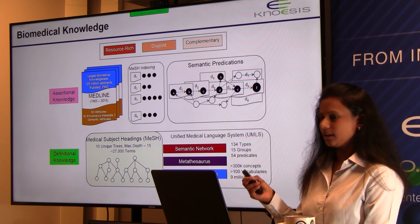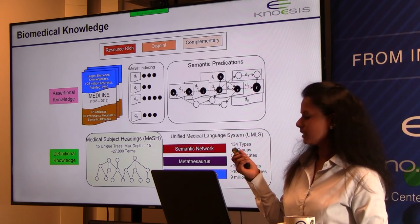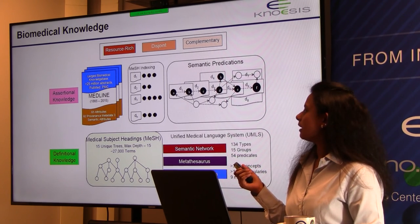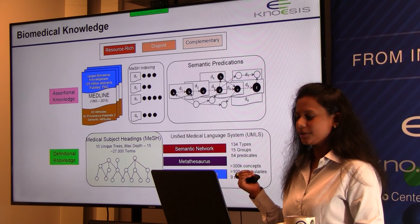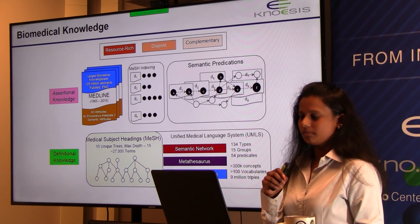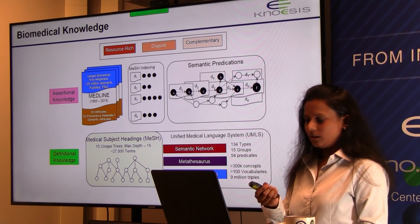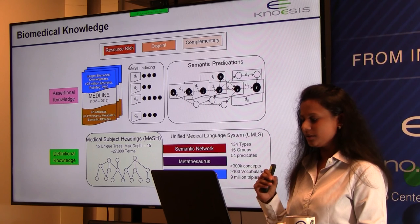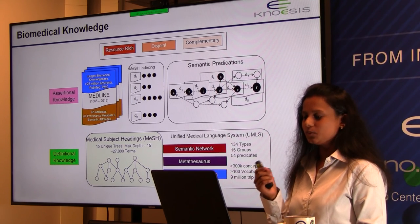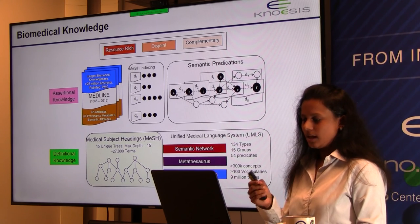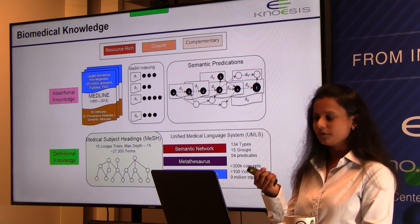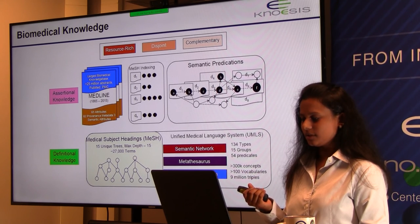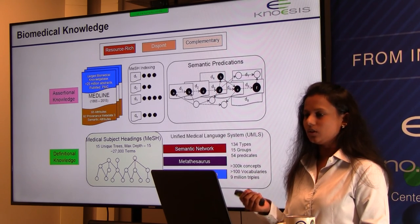The datasets used in this work include: Medline, a repository of 25 million biomedical articles; semantic predications, which are facts extracted from those articles; MeSH headings, a hierarchy of medical subject headings used for indexing PubMed articles; and the UMLS, which has three components — the semantic network providing relationships, the metathesaurus containing more than 300,000 concepts, and the specialist lexicon of English and biomedical terms.